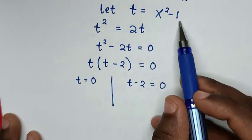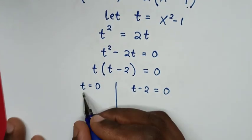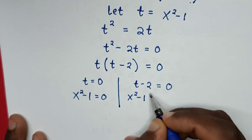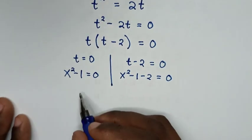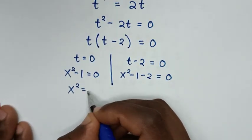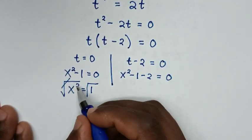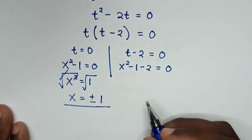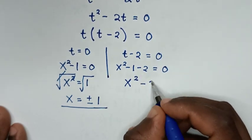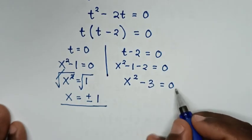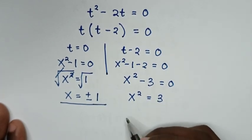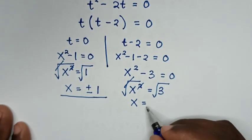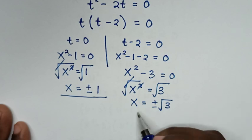Since t = x² - 1, substituting back: first solution x² - 1 = 0 gives x² = 1, so x = ±1. Second solution x² - 1 - 2 = 0 gives x² - 3 = 0, so x² = 3 and x = ±√3. These are all the values of x.